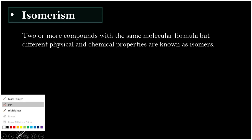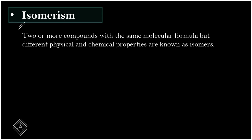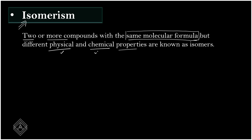In this video, we are going to discuss the concept of organic chemistry termed as isomerism. Definition: two or more compounds with the same molecular formula but different physical and chemical properties are called isomers, and the phenomenon they show is called isomerism.